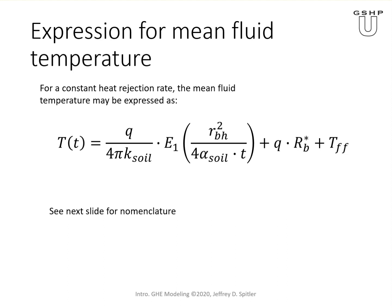If we put those together, the temperature at the borehole wall is given by this first term here — this is the temperature rise at the borehole wall. Then the temperature rise at the fluid, in addition to the rise at the borehole wall, is given by the heat transfer rate in watts per meter or BTUs per hour per foot, times the effect of borehole thermal resistance. That gives us the delta T from the borehole wall to the mean fluid temperature.